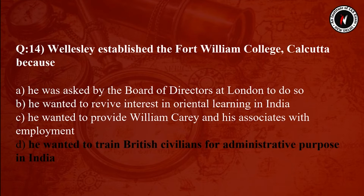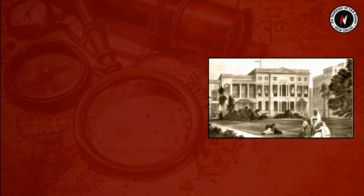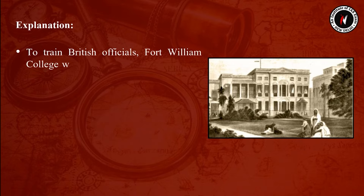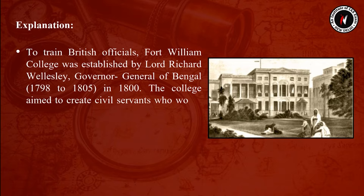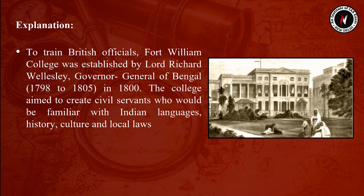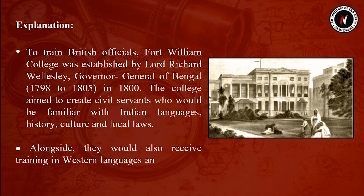The answer is Option D. Wellesley established the Fort William College, Calcutta because he wanted to train British civilians for administrative purposes in India. Fort William College was established by Lord Richard Wellesley, Governor-General of Bengal, in 1800. The college aimed to create civil servants familiar with Indian languages, history, culture, and local laws, alongside training in western languages and the art of administration.